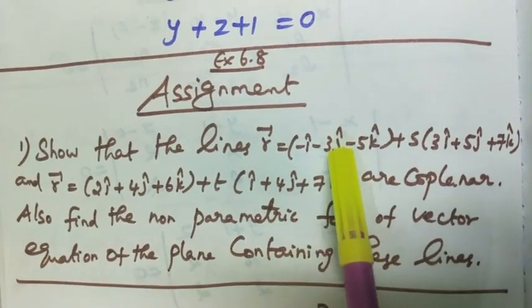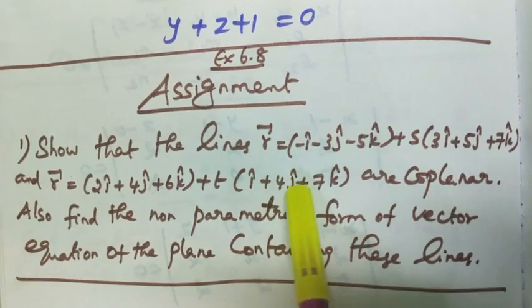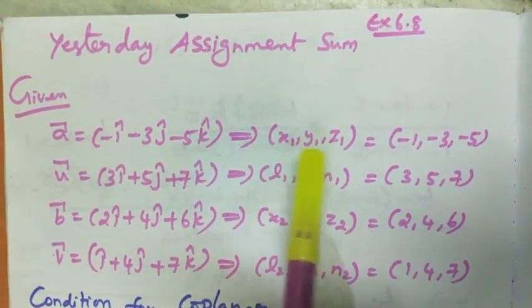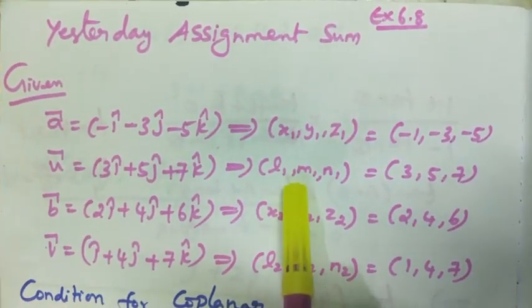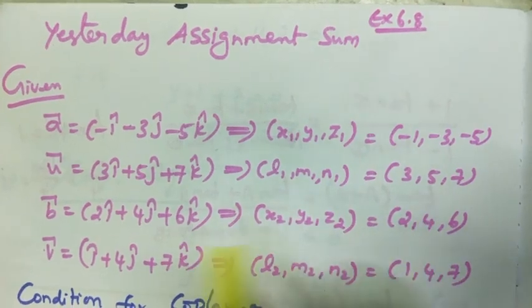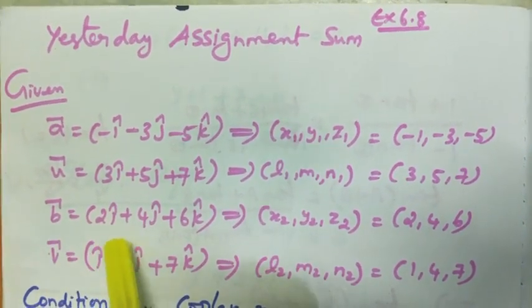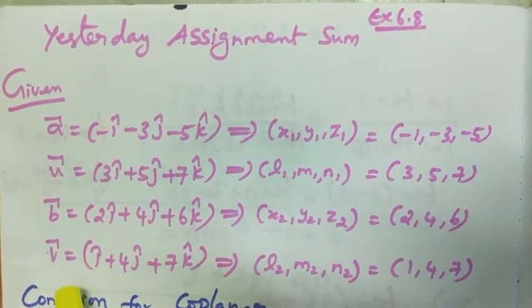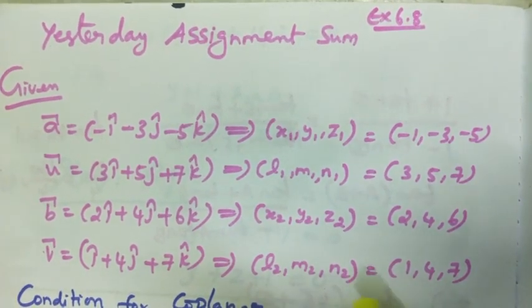This is a vector, it is u vector, this is b vector. So this is a vector, it is a point formula. It is u vector, direction ratios l1, m1, n1. B vector, second line, point 2, b vector 2i cap plus 4j cap plus 6k cap. Then direction ratios of second line, v vector equal to l2, m2, n2.